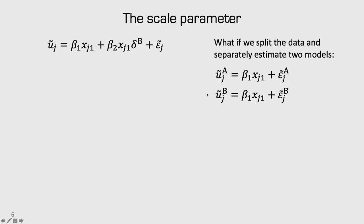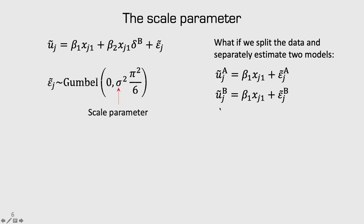But what if we split the data and separately estimated two different models for group A and group B and then compared the coefficients? Well, it turns out that's problematic. The main reason is because of the error term. Remember that to get a logit model, we make a specific assumption about the error term — it's Gumbel distributed with a mean of 0 and some variance. This pi squared over 6 term is just a fixed number, so really everything depends on this sigma squared term, which is an unknown parameter we call the scale parameter.